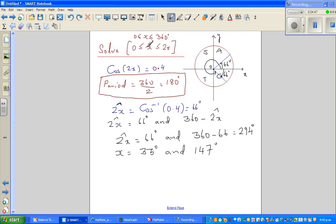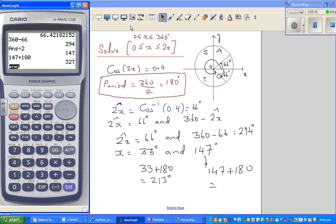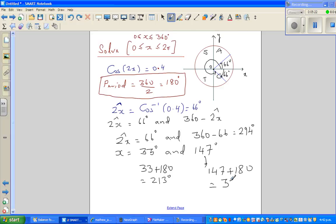These are the two angles. But we want the answer from between 0 to 360. So the other angle would be 33 plus 180 degrees, which is 213 degrees.